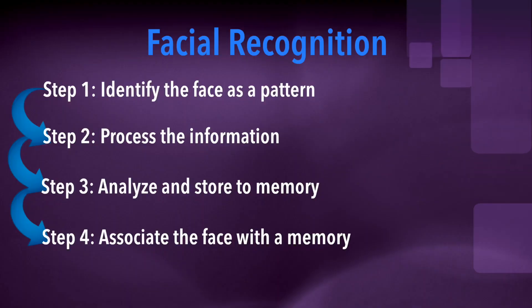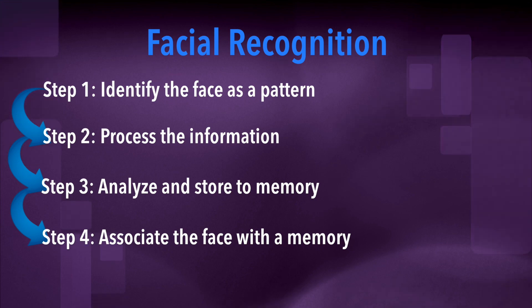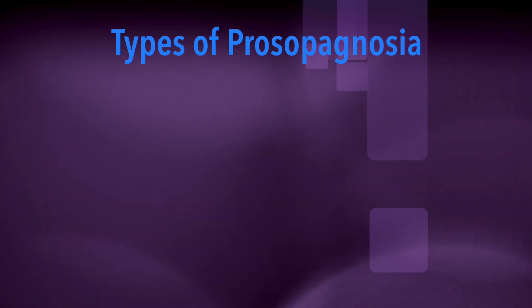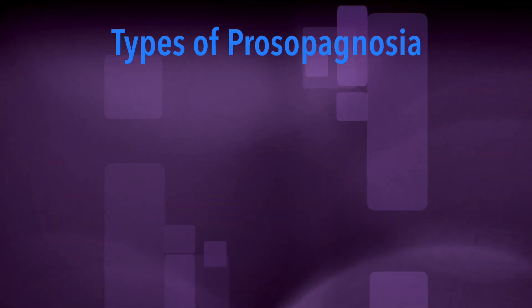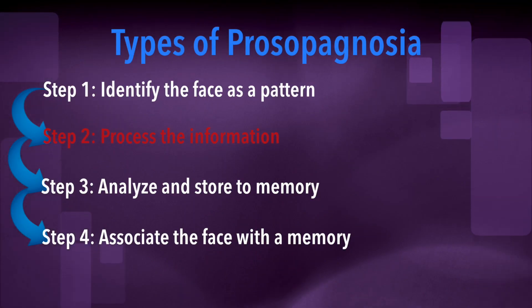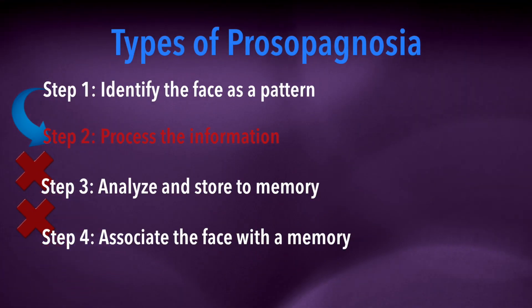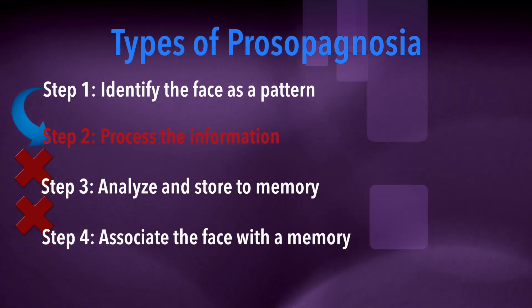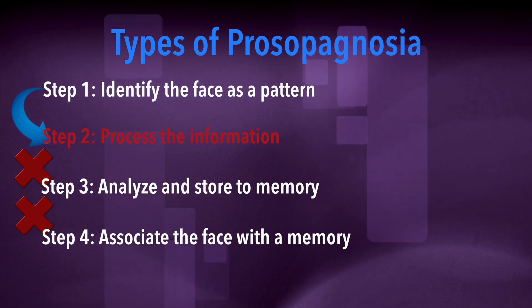We just saw the facial recognition process for the neurotypical. Now let's take a look at how prosopagnosia causes disruption. If you have trouble with differentiating between two faces next to each other, then you'll likely have trouble determining if one face is or isn't one that you've seen before, which would then lead you to having trouble further down the chain. This is called aperceptive prosopagnosia.